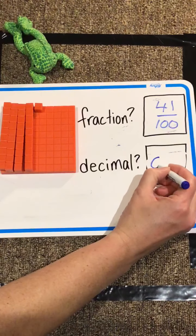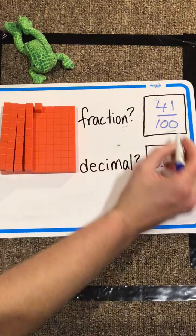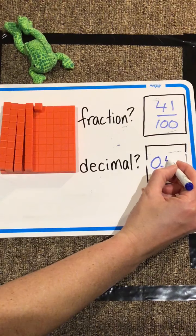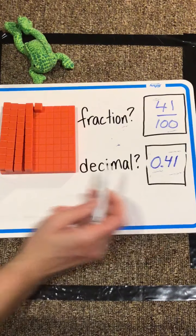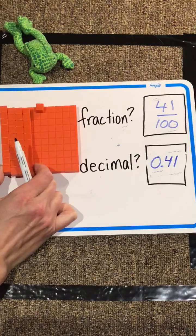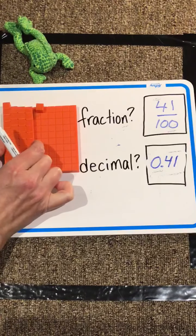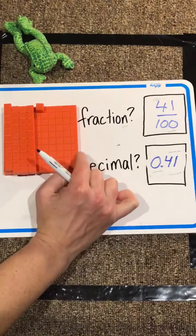So, the decimal, we know we can just take the number, as long as it's a two-digit number, we can take the number and put it after the decimal point, because there are four tenths plus this one extra one hundredth, so it works out that way.